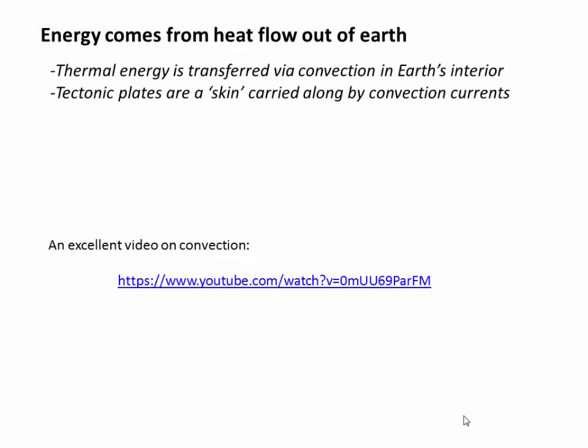The answer is that energy comes from heat flow out of Earth's interior. Heat is building up inside Earth and it's transferred up to the surface by a process called convection. Those tectonic plates, although they seem big to us, are basically just a skin — a thin, rigid skin that's being carried along the surface of Earth by these very powerful convection currents in the interior of Earth.